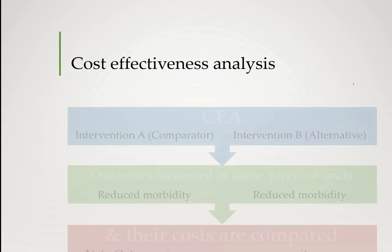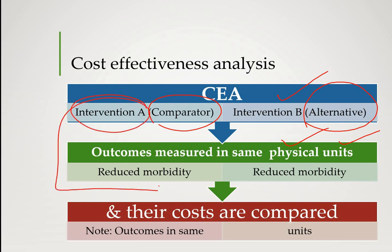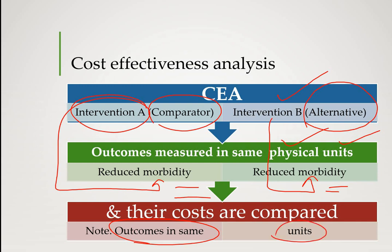The important concept of cost effectiveness analysis is that one is the comparator already in practice in your hospital or pharmaceutical care unit, and you are going to opt for an alternative therapy. What is important is that the outcome may be in the same physical units as observed. For example, intervention A and intervention B are both going to reduce a particular morbidity, so both are measured in the same physical units, but their costs are compared.